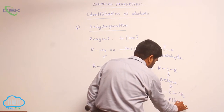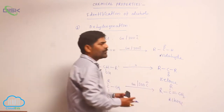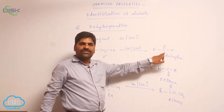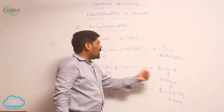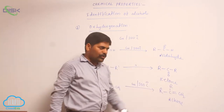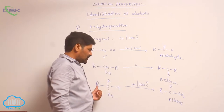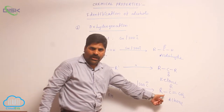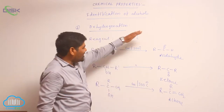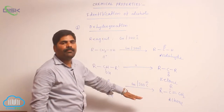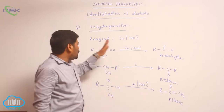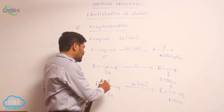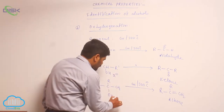In summary: a first-degree alcohol converts into an aldehyde, a second-degree alcohol converts into a ketone, and a third-degree alcohol converts into an alkene. Based on this, first-degree, second-degree, and third-degree alcohols can be separated and identified.